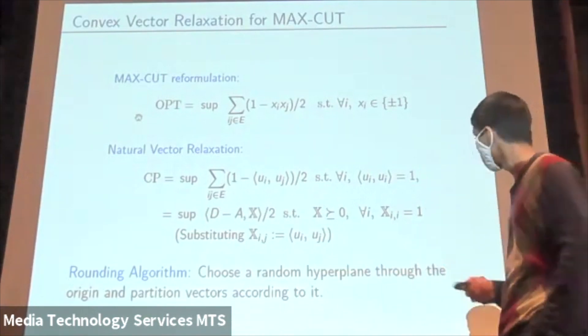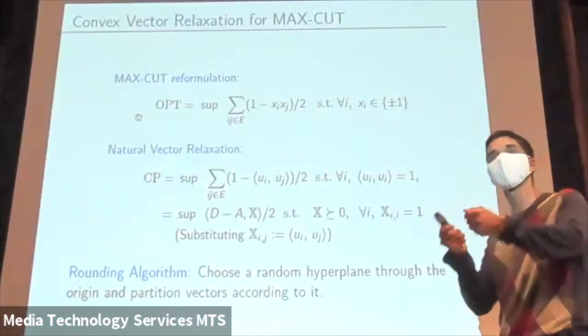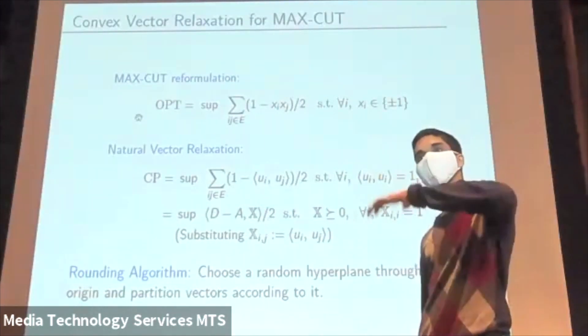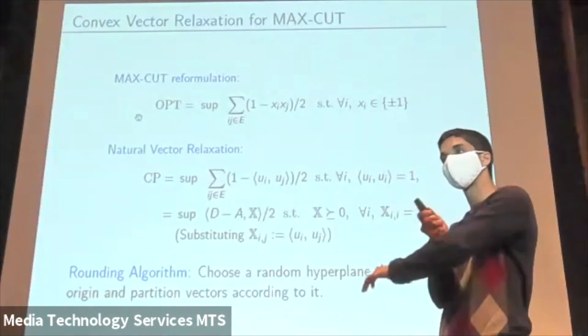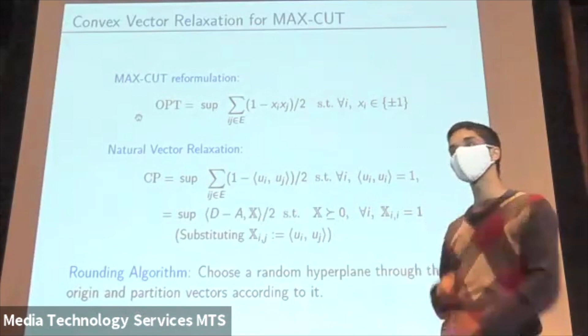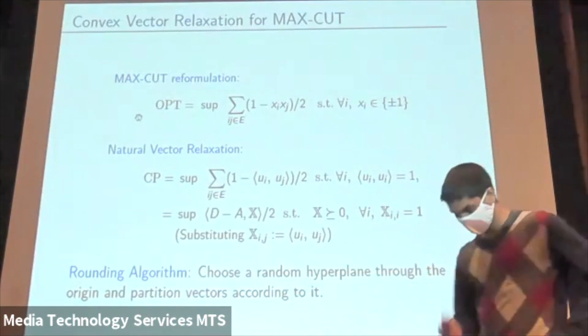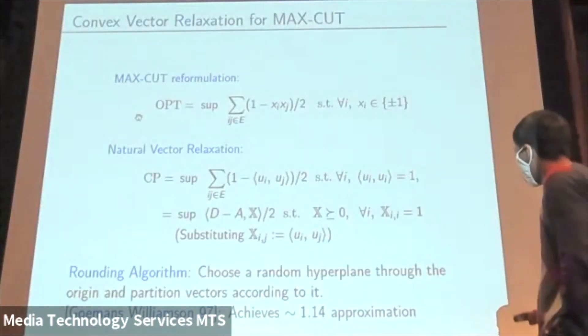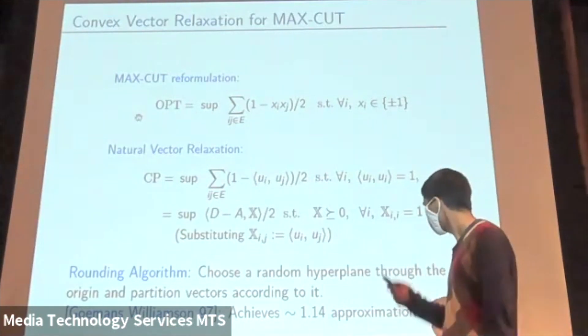Finally, the rounding algorithm, once we get this optimal vector that we solve for, this optimal set of vectors, is to just sample a random hyperplane through the origin and give a vertex plus 1 if its vector is on one side of the hyperplane and minus 1 if its vector is on the other side. Remarkably, it turns out this achieves the 1.14 approximation and that was proved by Goemans and Williamson, the classical result.